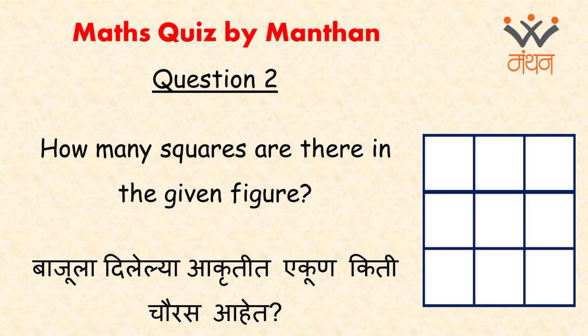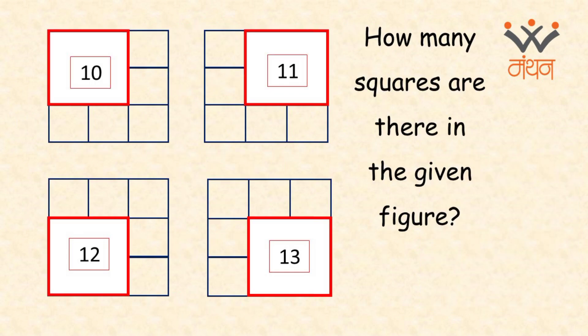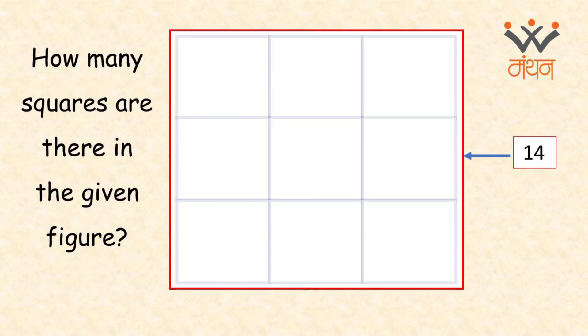Question number 2: how many squares are there in the given figure? The answer is 14 — 9 small squares, 4 squares each combining 4 small squares in different areas, and 1 bigger one comprising all 9 small squares. If you answered this correctly, it means your concept of a square is clear and you are able to handle a simple version of spatial imagination, which is required in mathematics.